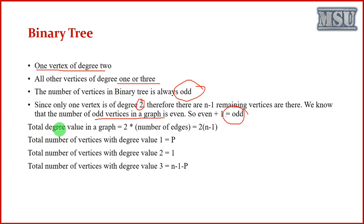We have to identify total degree value in a graph, which is equal to 2 into number of edges. Number of edges in a tree is actually n minus 1. So 2 into n minus 1. We are considering there are three types of vertices possible: one vertex is of degree 1, another one is degree 2, another one is degree 3.